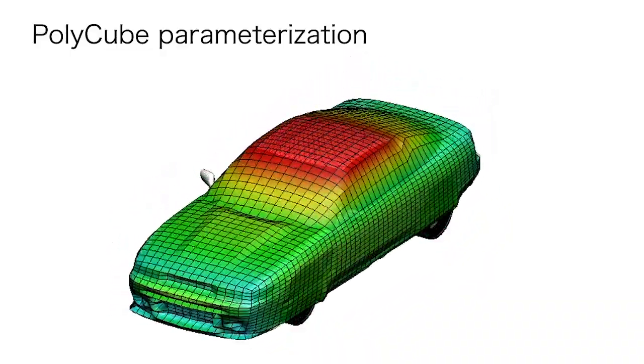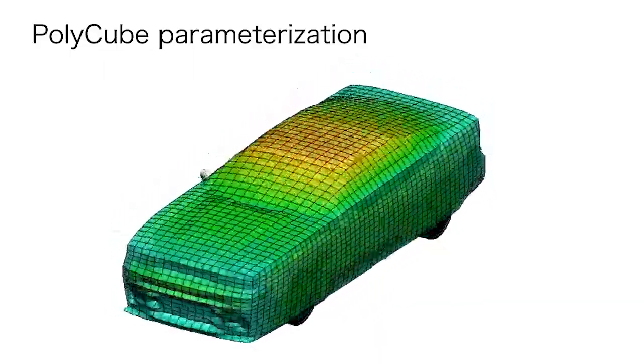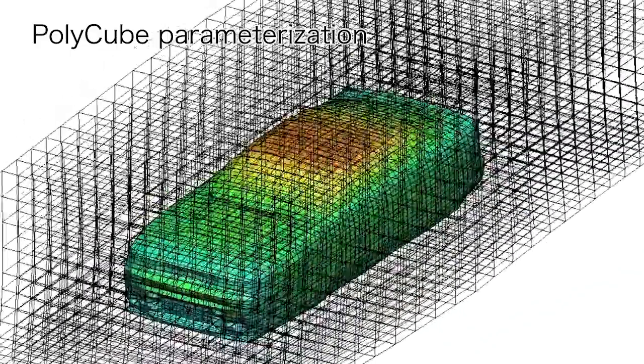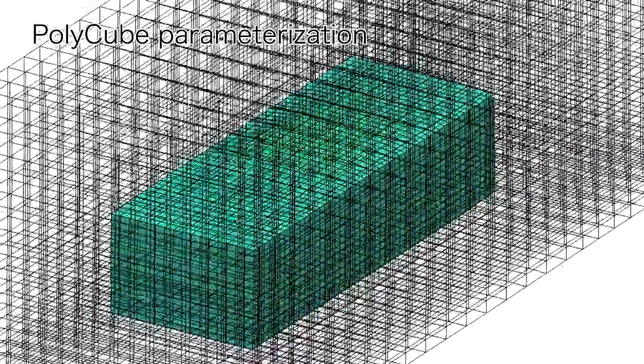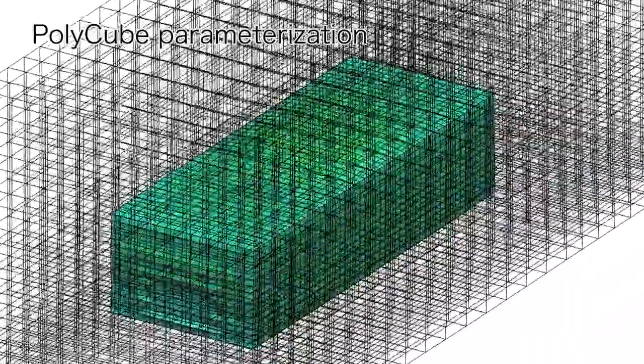Hence, the polycube deformation vector is perfectly suited as input for machine learning. We also use the polycube to construct a hexahedral grid around the object.